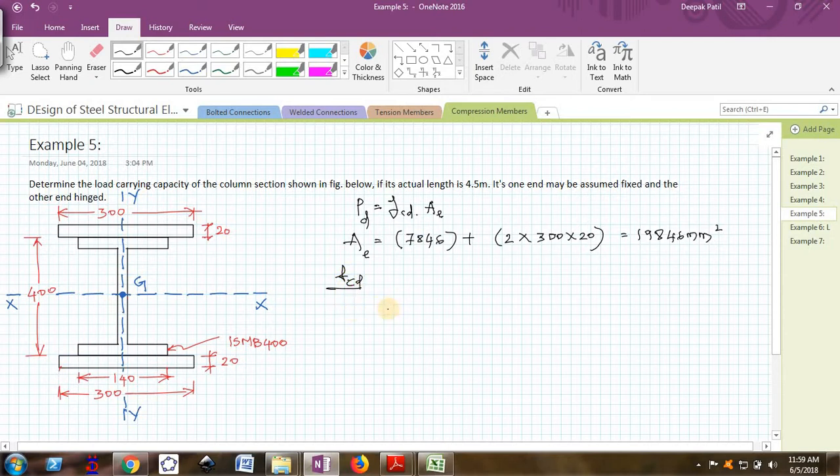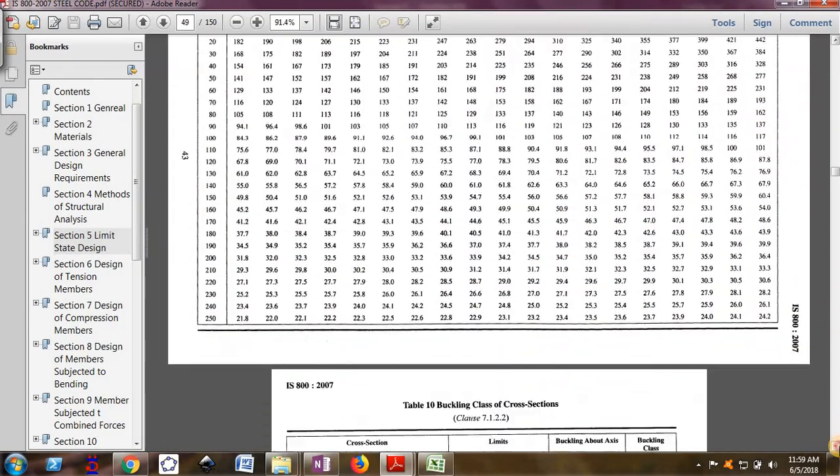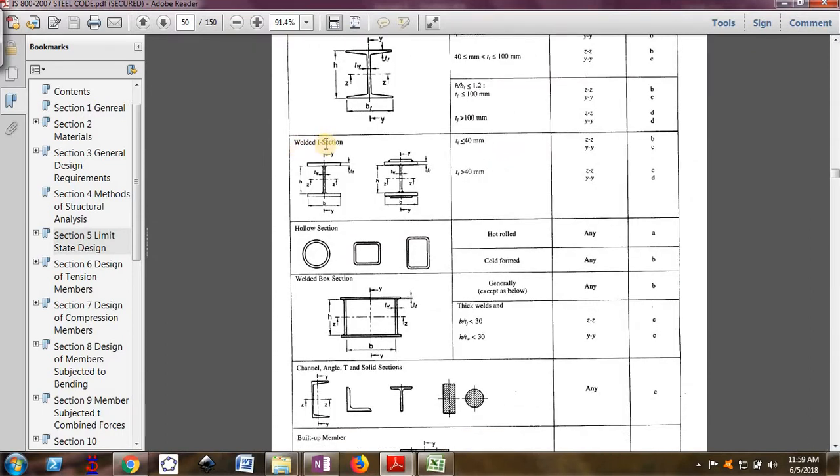Now to find F_CD, I have already told you, you need the first thing as the buckling class. Here we can't usually assess the buckling class directly so we need to find a few terms. Now here also we can find the buckling class very directly because you can see here if I come down, that is the table which gives the buckling class. You can see here welded I sections, that is built-up column sections, built-up sections, they actually fall under...